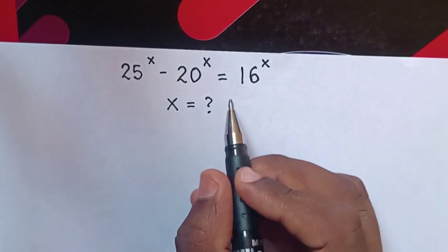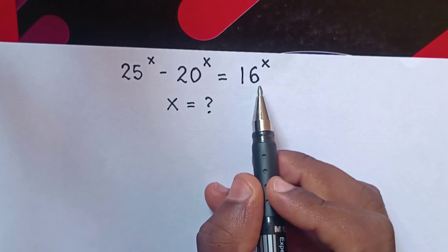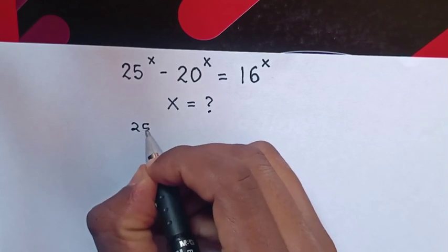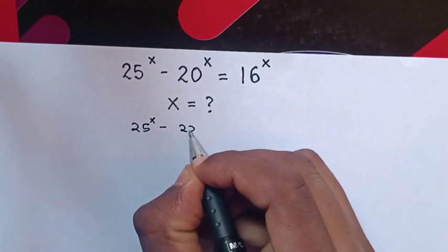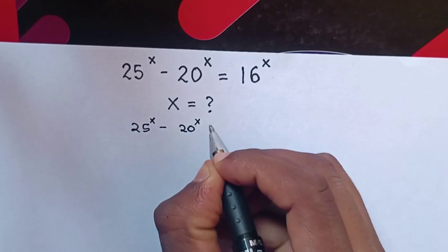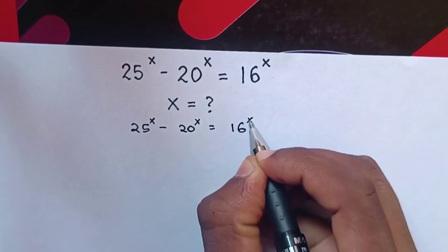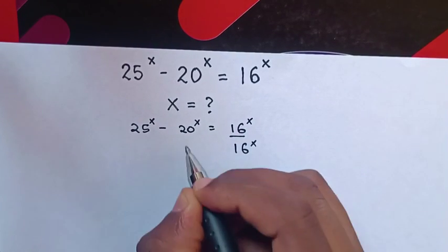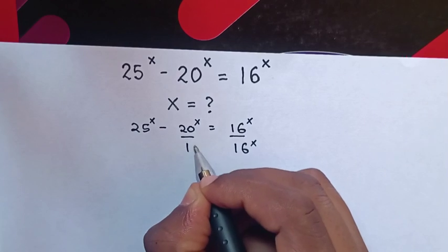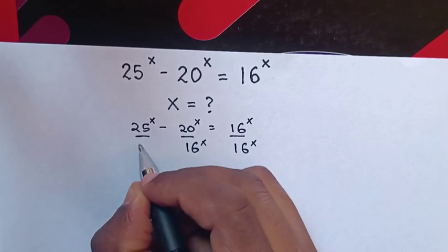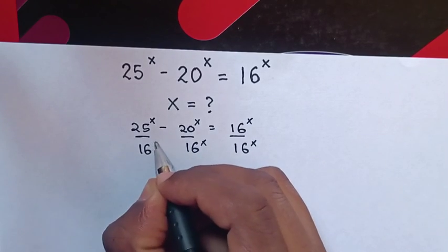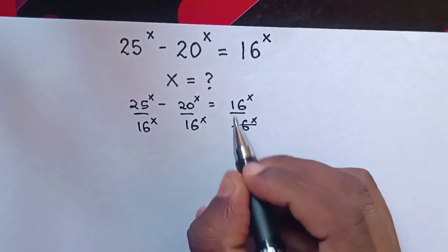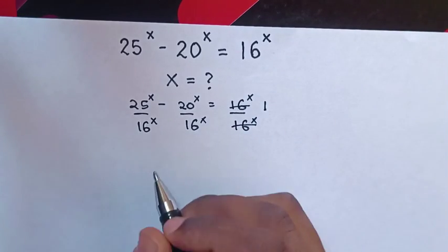First we divide by 16 power x on both sides. Then it will be 25 power x minus 20 power x divided by 16 power x, and here by 16 power x. Simplifying, this side will be equal to 1.